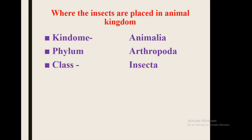In the Arthropoda phylum, there are other classes as well. One of those classes is Insecta. So the insect belongs to the Animal Kingdom, and the phylum is Arthropoda. This is the place of insects in the Animal Kingdom.